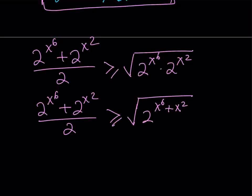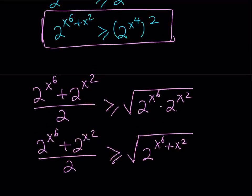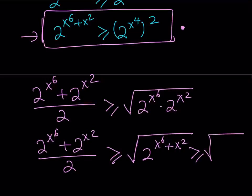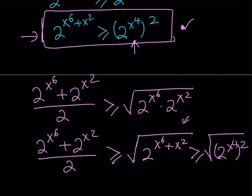Now I can use the inequality we saved earlier. We know that 2 to the power x to the sixth plus x squared is greater than or equal to 2 to the power x to the fourth, squared. So this quantity is greater than or equal to the square root of 2 to the power x to the fourth, squared. Taking the square root and squaring cancel each other, so this simplifies directly.